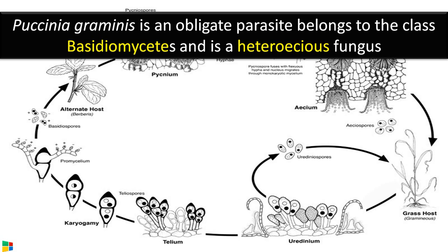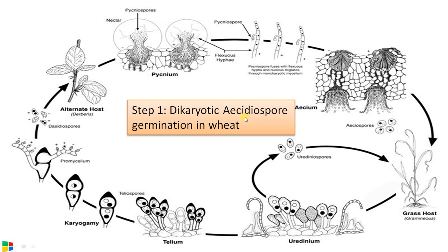Puccinia graminis is a heteroecious fungus, meaning it requires two hosts to complete its life cycle. The primary host is wheat and the secondary host is barberry. Step one of the life cycle: dikaryotic aeciospore germination in wheat. Aeciospores are specialized spores formed on the lower side of the barberry leaf.